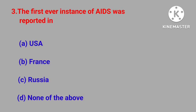Question number three: the first ever instance of AIDS was reported in — USA, France, Russia, none of the above. Correct answer is USA.